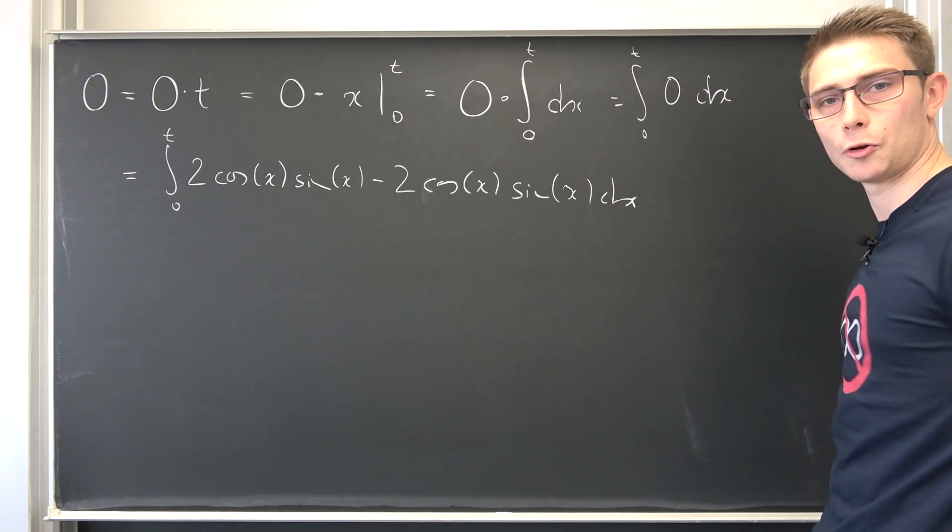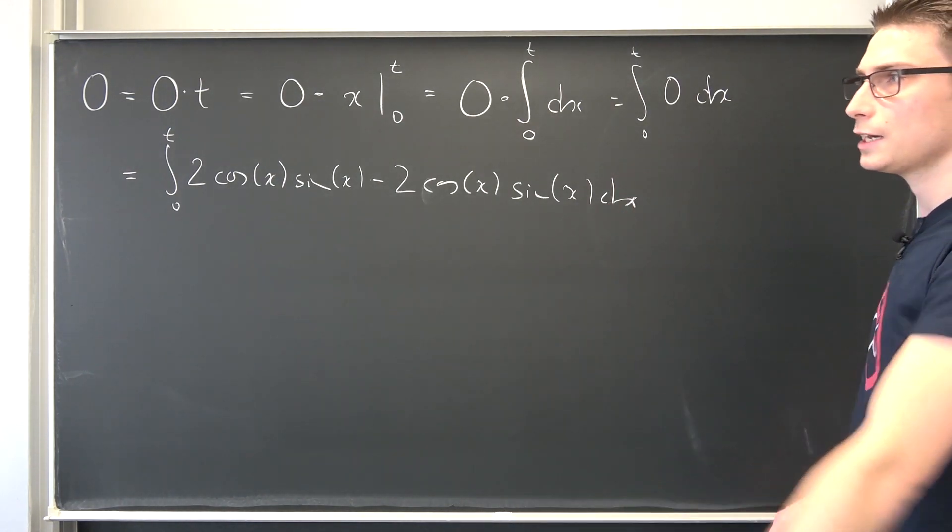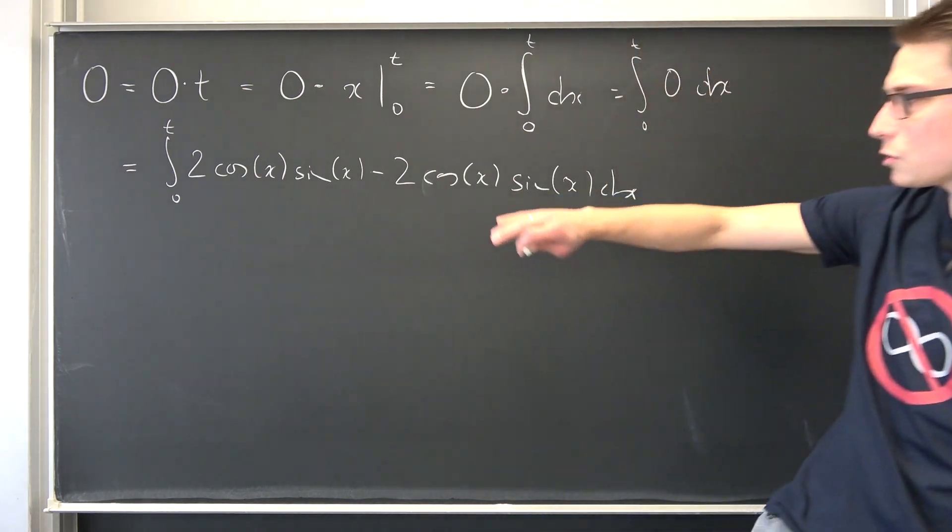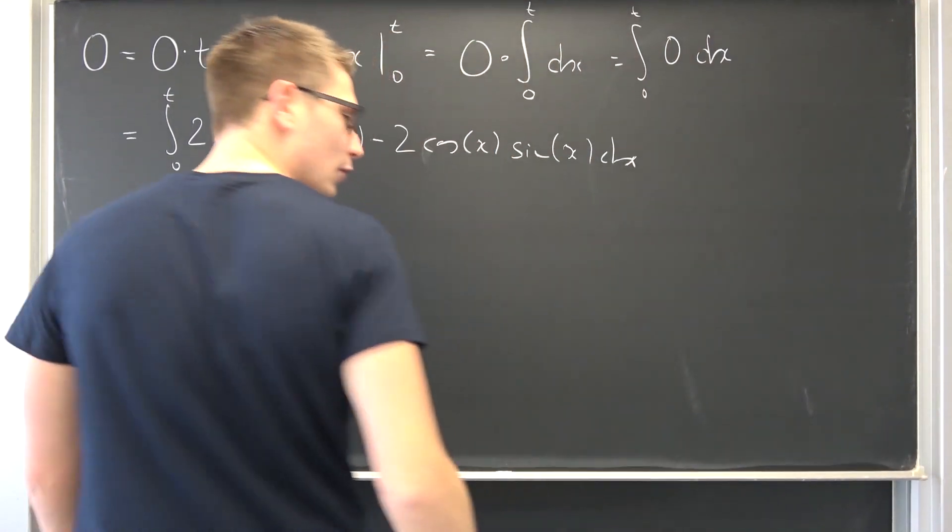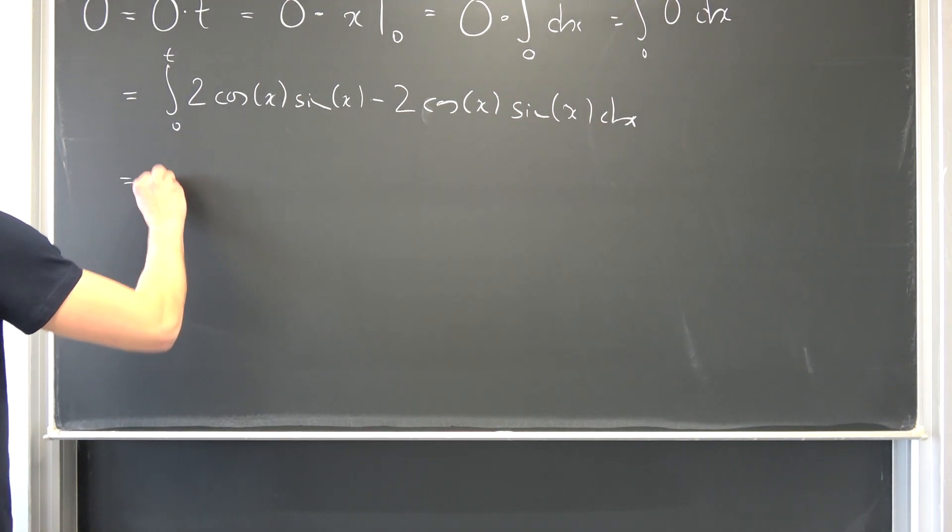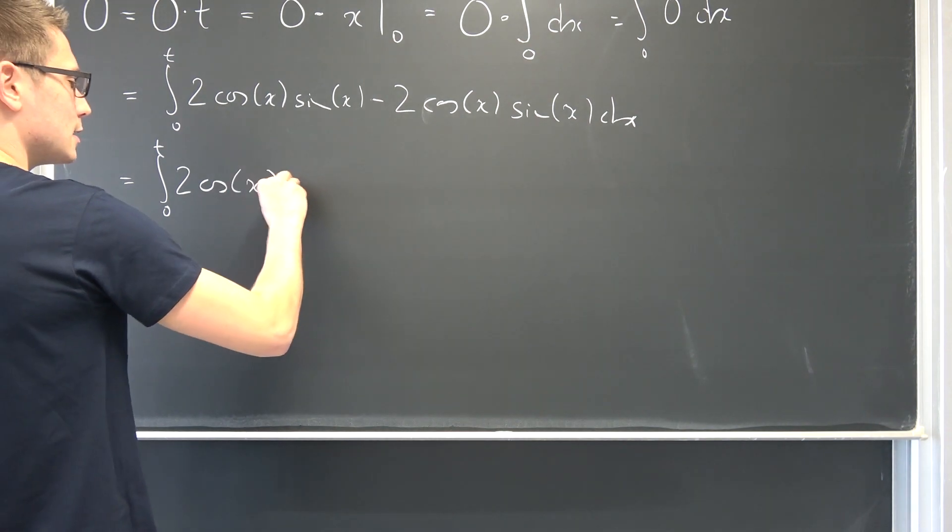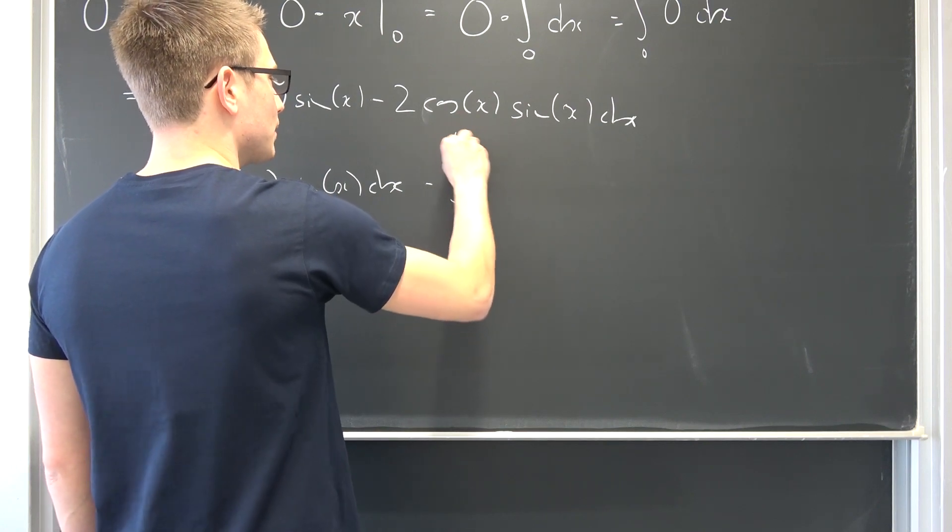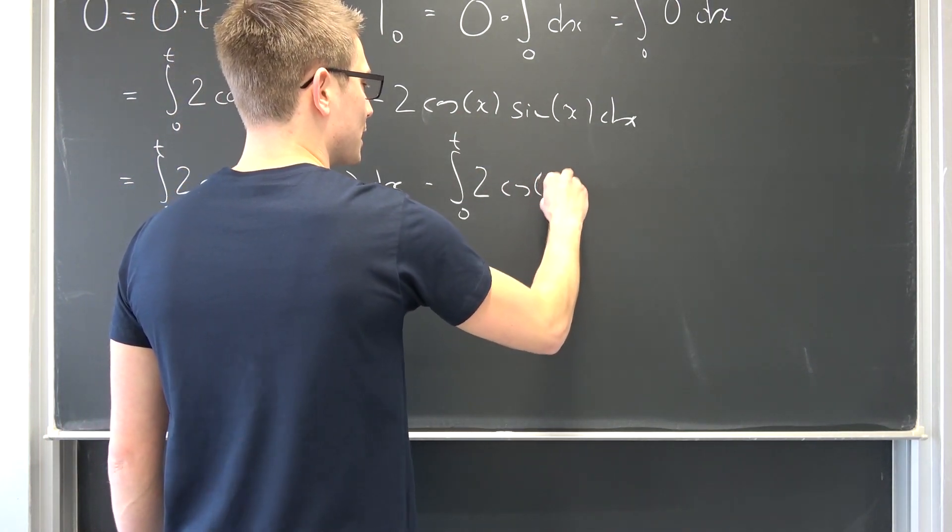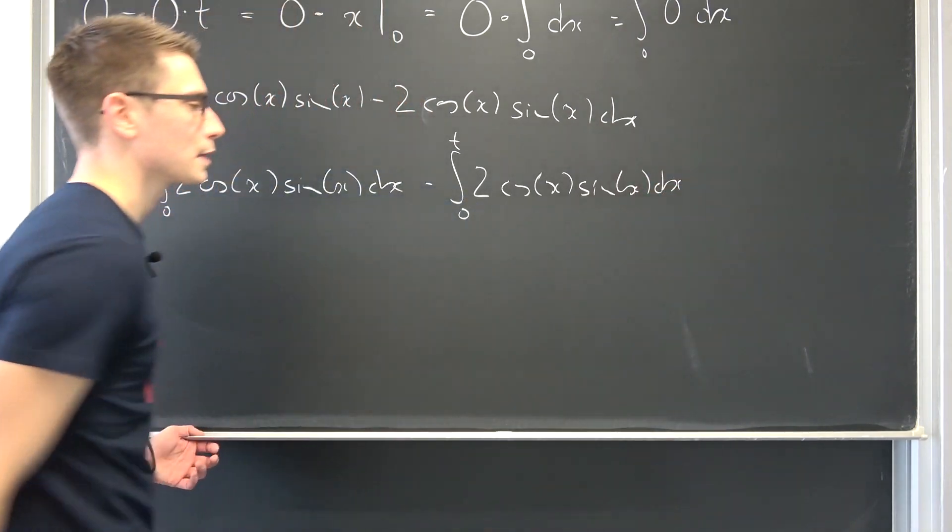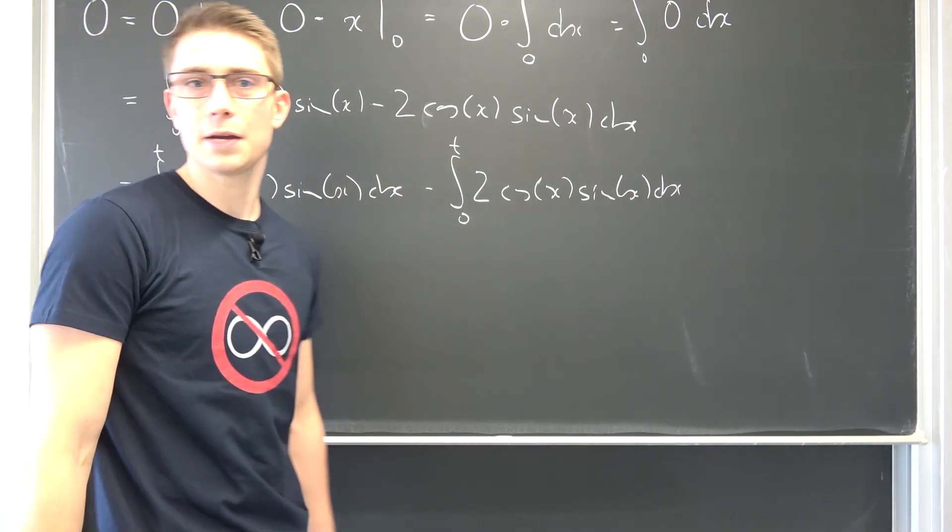From this point onwards, we can make use of the linearity of the integral yet again, to split this up into the integral of this thing and the integral of this thing. Let us move on. Nice and good sheet. Now, we are going to get the integral from 0 to t of 2 times the cosine of x sine of x dx, minus the integral from 0 to t of 2 times the cosine of x sine of x dx. And here we go.